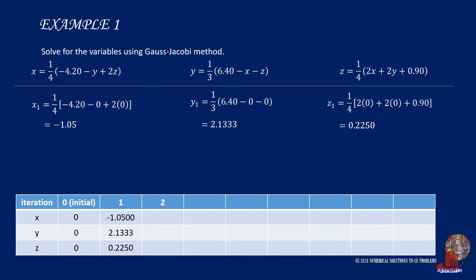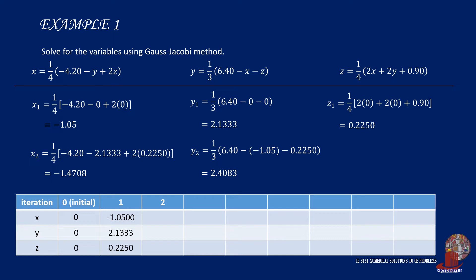Moving to the next iteration, x₂ is a quarter of negative 4.2 minus 2.1333 plus 2 times 0.2250, giving negative 1.4708. y₂ is a third of 6.4 minus negative 1.05 minus 0.2250, resulting in 2.4083. And z₂ is a quarter of 2 times negative 1.05 plus 2 times 2.1333 plus 0.90, giving 0.7667. These are the second iteration values.